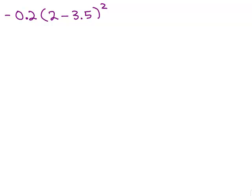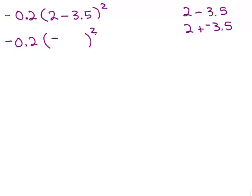Here's our next one — see if you can do this one by yourself first. We've got parentheses, so we have to simplify within parentheses first. I've got to do 2 minus 3.5. Remember, that means 2 plus negative 3.5. I'm adding a positive and a negative, so the answer is going to be negative. I take their difference: 3.5 minus 2.0 is 1.5. So 2 minus 3.5 equals negative 1.5.